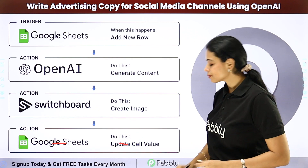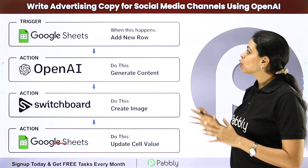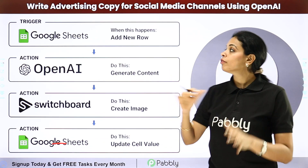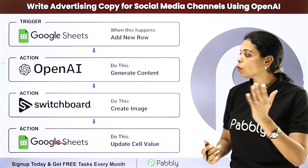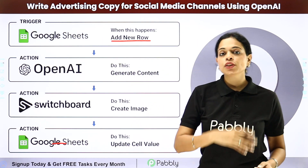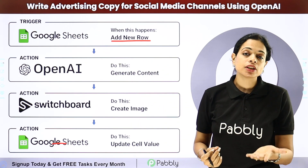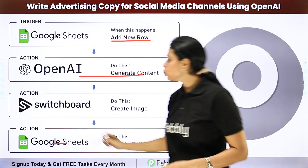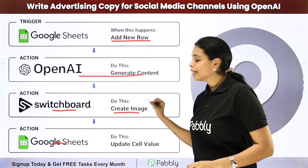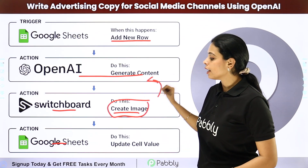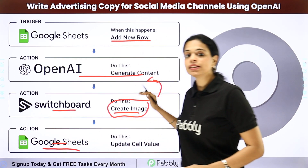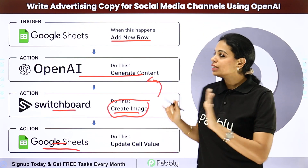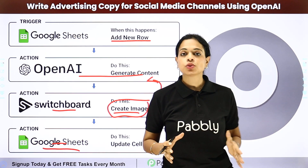The last example is writing advertising copy for social media channels using OpenAI. Whenever you have to write an advertising copy for any social media channel for any product — whether it's a product launch, a product review, or a new feature — automatically with the help of OpenAI you will be able to generate content. Then with the help of Switchboard you would be able to create an image, this image will incorporate that data, and finally the link of this image will be shared in your Google Sheet to update the cell value. These are some of the automations you can try with OpenAI, and there are loads more.